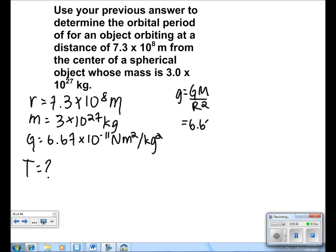We plug in the numbers to get 6.67 times 10 to the negative 11 times 3 times 10 to the 27, all over 7.3 times 10 to the 8th squared.